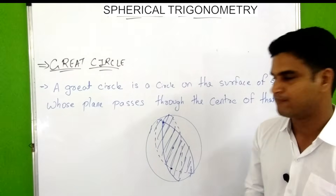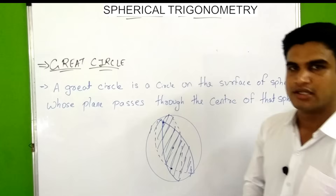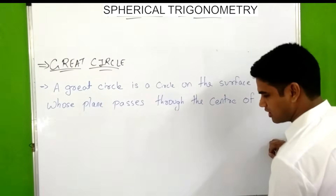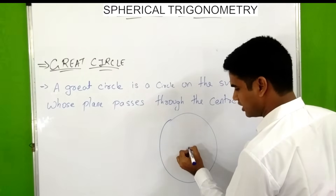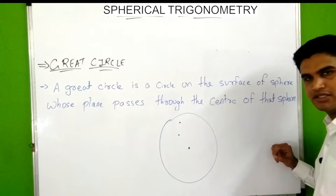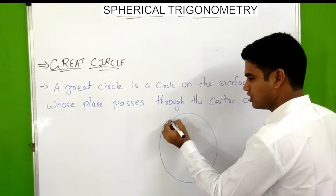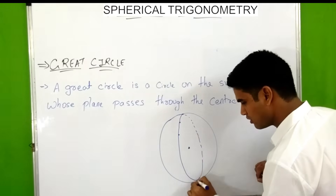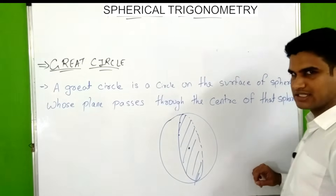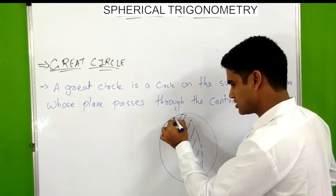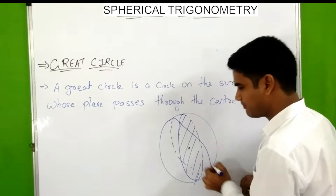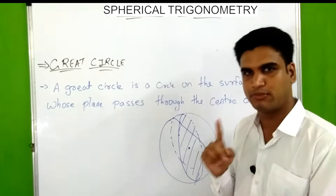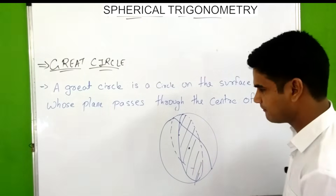The next property states that if we have two given points on the surface of a sphere, only one great circle can pass through those two points. No other great circle will pass through both of them. However, if those two points are diametrically opposite to each other, then any number of great circles can pass through them.